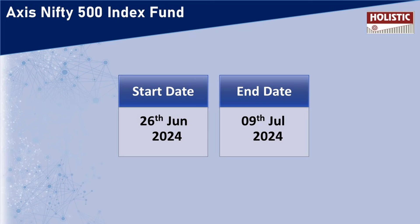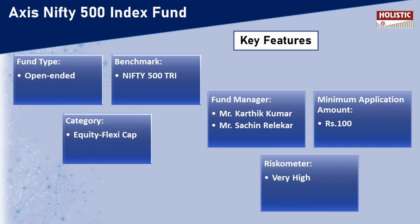Before analyzing this fund, let us first understand what the Axis Nifty 500 Index Fund is. As this is an NFO, it starts on 26th June 2024 and ends on 9th July 2024. Key features include: it's an open-ended fund with Nifty 500 TRI as its benchmark, categorized under equity flexi cap. The fund managers are Mr. Kartik Kumar and Mr. Sachin Relekar. The minimum application amount is just 100 rupees, and the riskometer is rated very high.